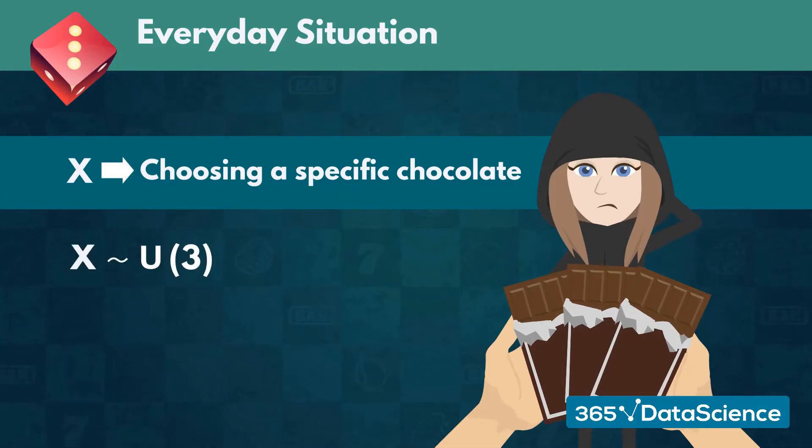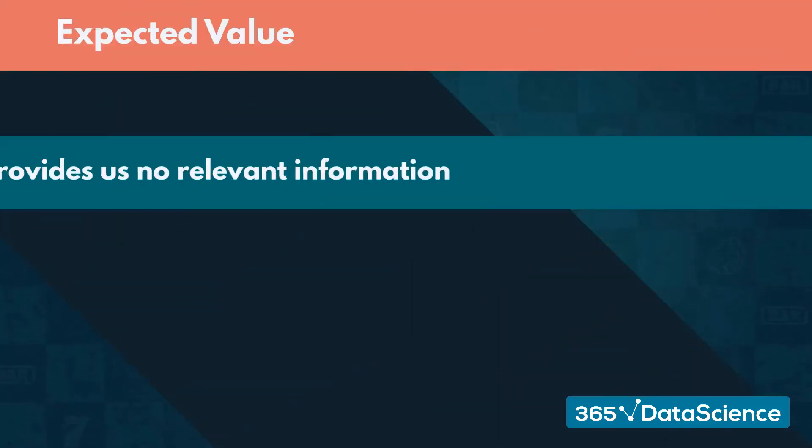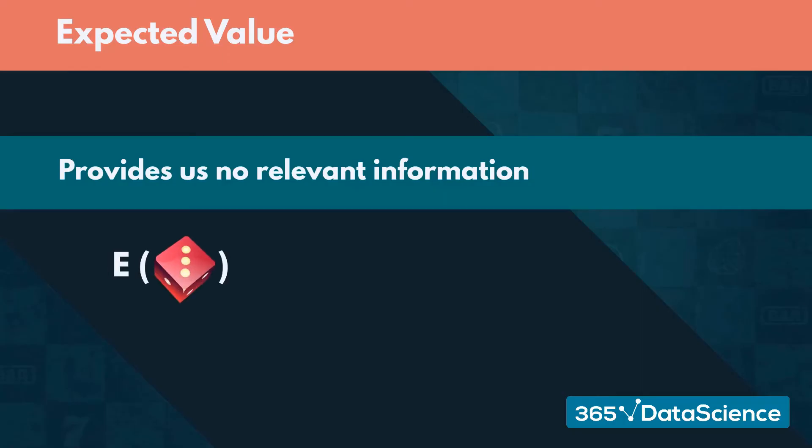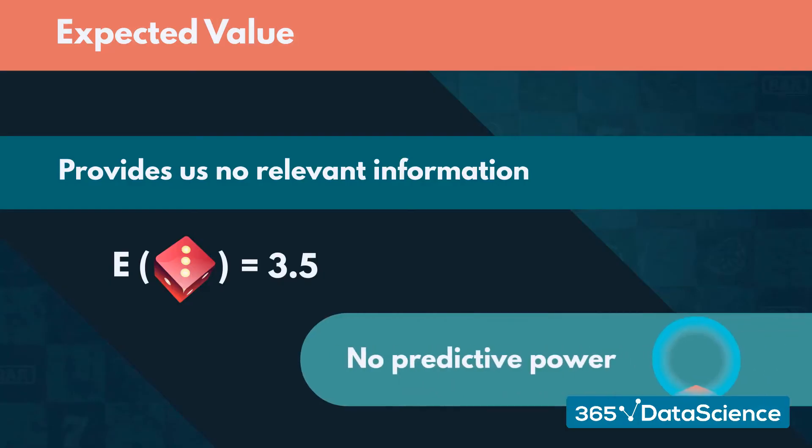One big drawback of uniform distributions is that the expected value provides us no relevant information. Because all outcomes have the same probability, the expected value, which is 3.5, brings no predictive power.